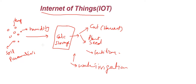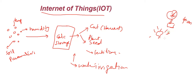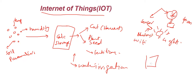Another example is a smart home. Inside our home, for example, we have a bulb and a fan. We are controlling this fan and bulb with the help of a smartphone. This light bulb has a sensor attached to it, and the fan also has a sensor and a communication device attached — such as Bluetooth or WiFi.